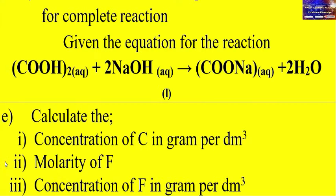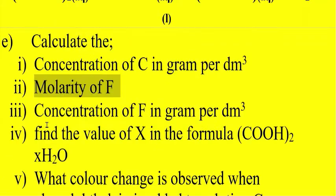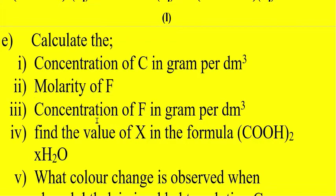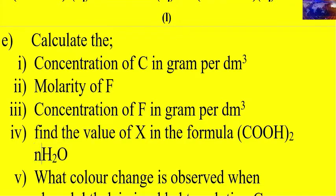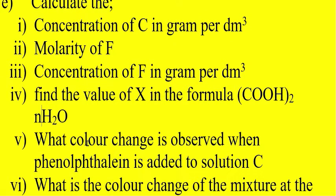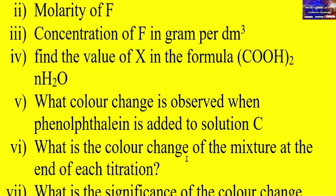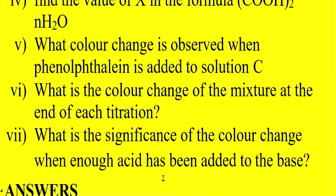Another question: calculate the concentration of C in grams per decimeter cubed. Calculate the molality of solution F. Calculate the concentration of F in grams per decimeter cubed. Find the value of N in the formula of hydrated oxalic acid — that is the number of moles of water of crystallization. What color change is observed when phenolphthalein indicator is added to solution C? What is the color change of the mixture at the end of each titration?